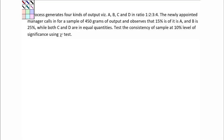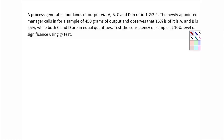Hello, welcome back to chi-square test. Let us import our question and get back to business. Here is our question. A process generates 4 kinds of outputs — A, B, C and D — in ratio 1:2:3:4. So there is some process which generates these outputs in ratios 1:2:3:4, meaning 1 part of A, 2 parts of B, 3 parts of C and 4 parts of D.